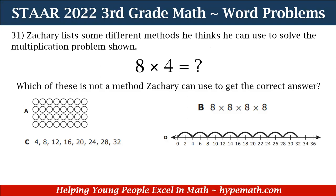Let's look at number 31. Zachary lists some different methods he thinks he can use to solve the multiplication problem shown, which is eight times four. Which of these is not a method Zachary can use to get the correct answer?